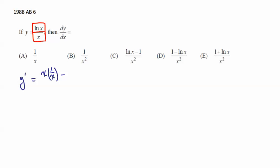low d high minus high, the numerator, d low, the derivative of the denominator, which is just 1, all over low squared, which is x to the second.